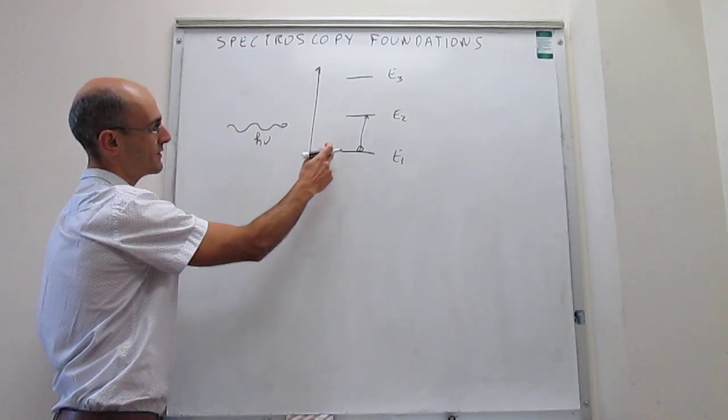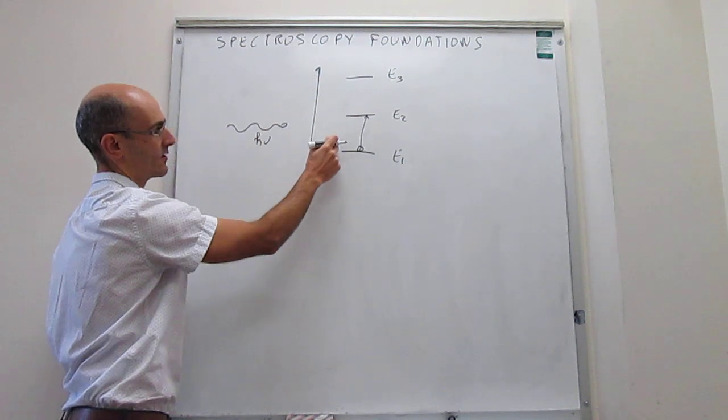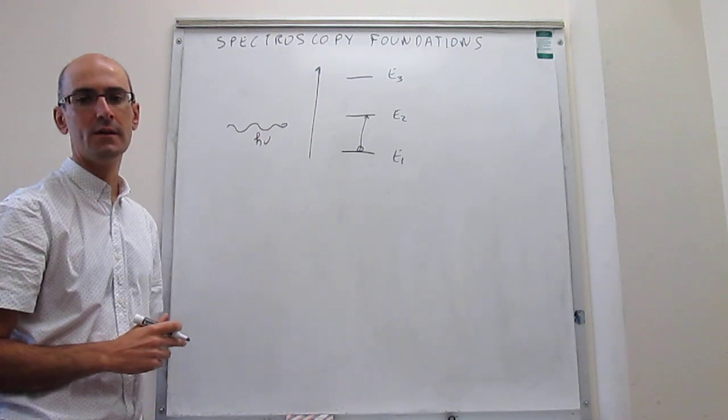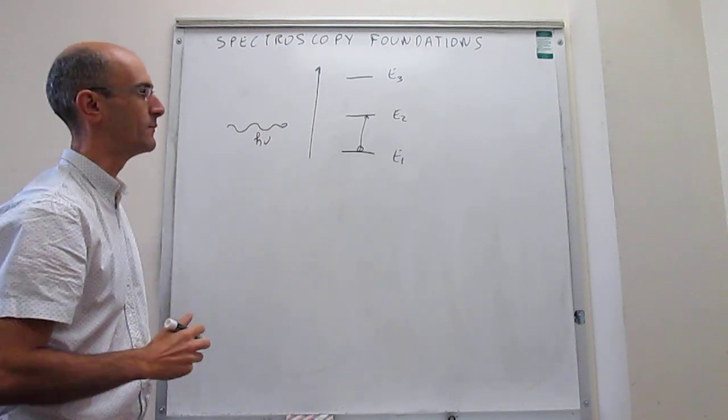what you do is you promote the system from a low energy state to a high energy state, as long as the difference in energy between these two states that are bridged by the excitation have the same energy as the photon that you're actually shining on the sample.